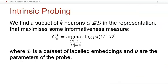Our goal is to find a subset of k-neurons in the representation that maximizes some informativeness measure such as accuracy or mutual information.